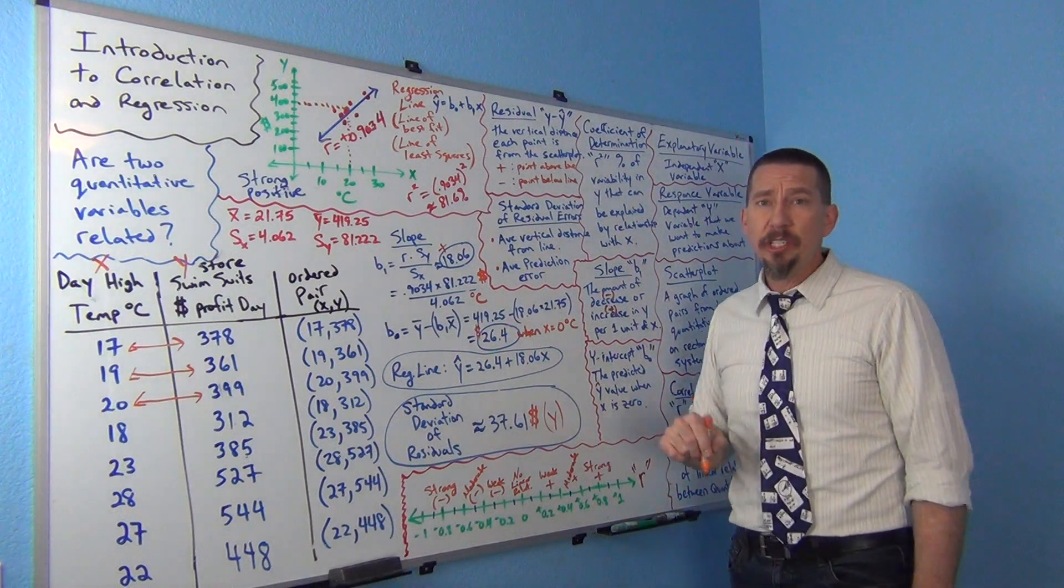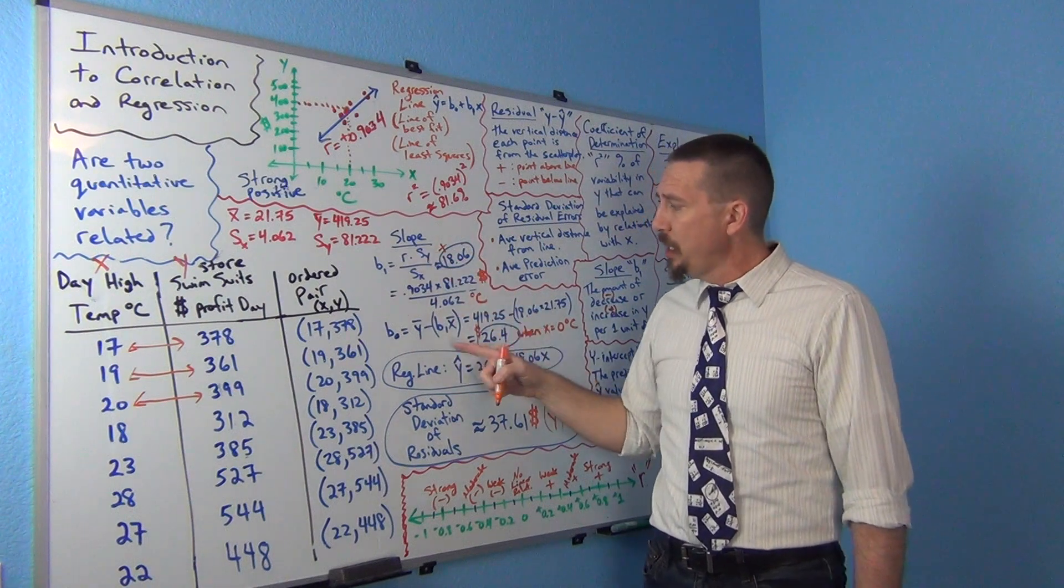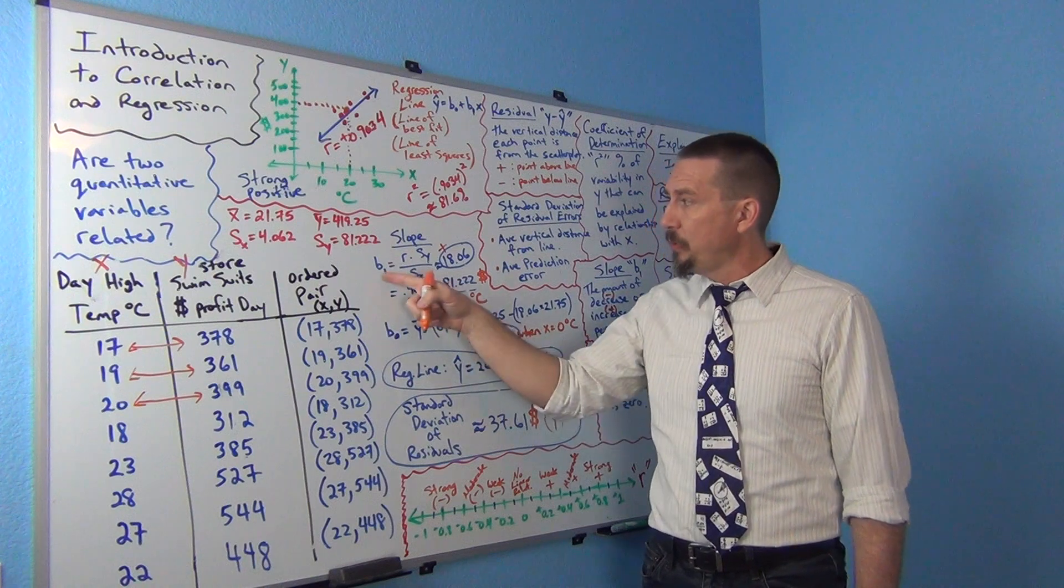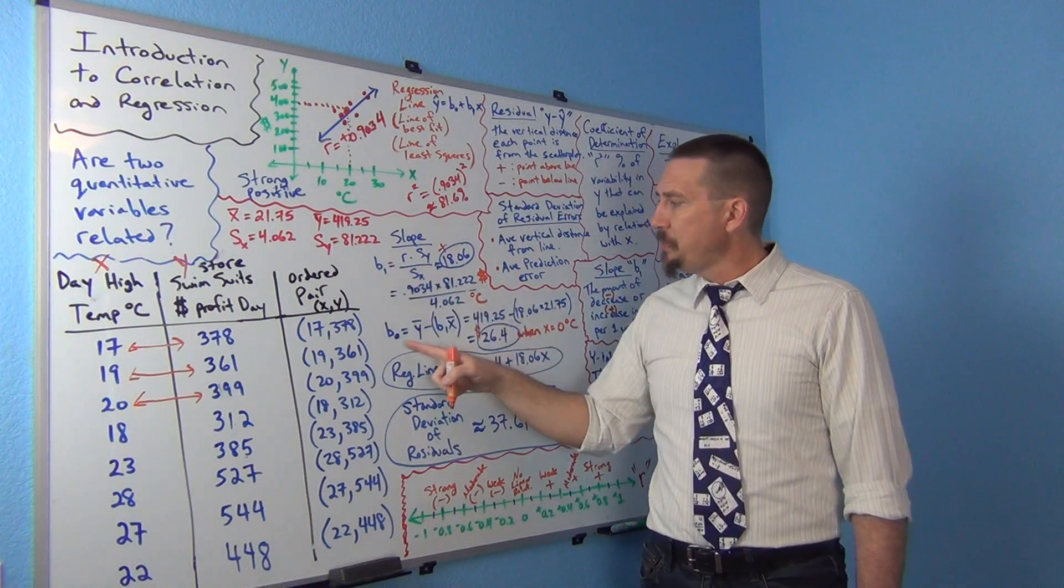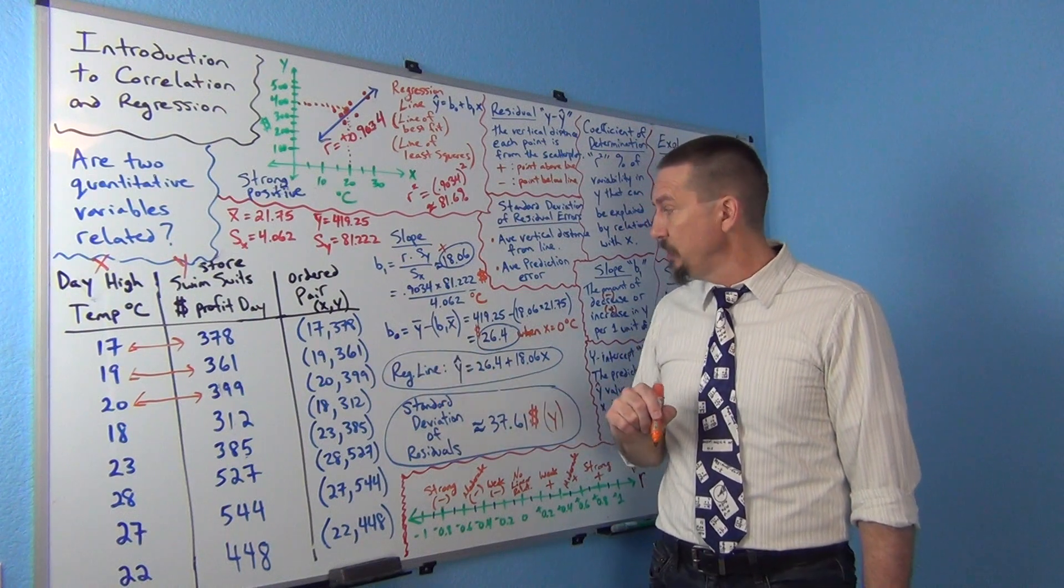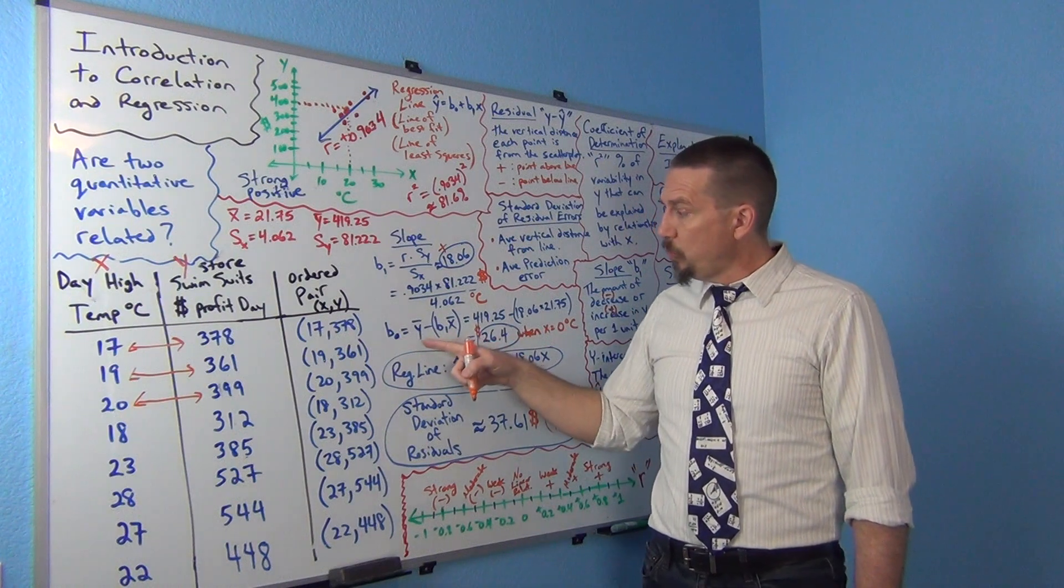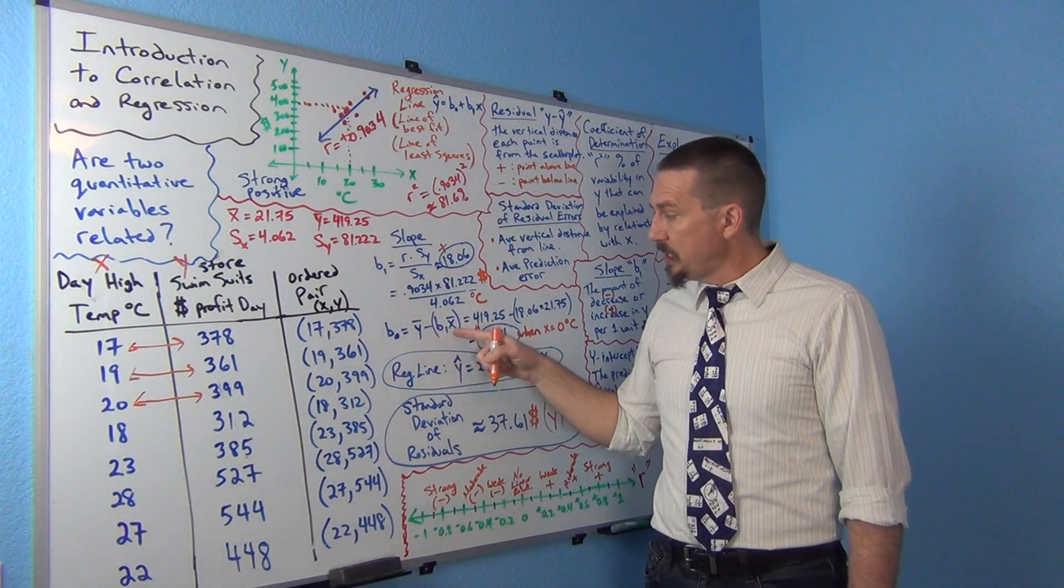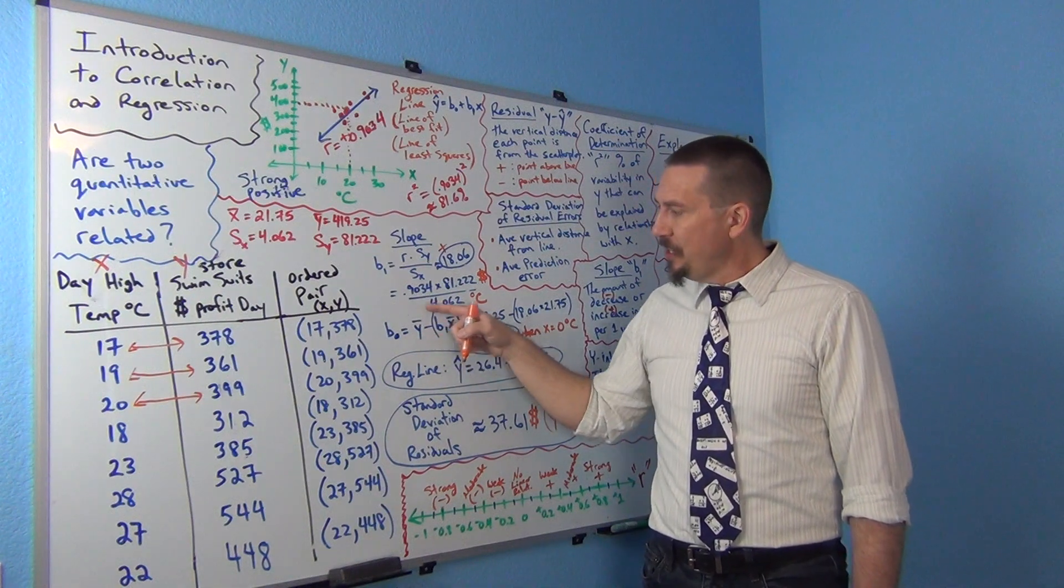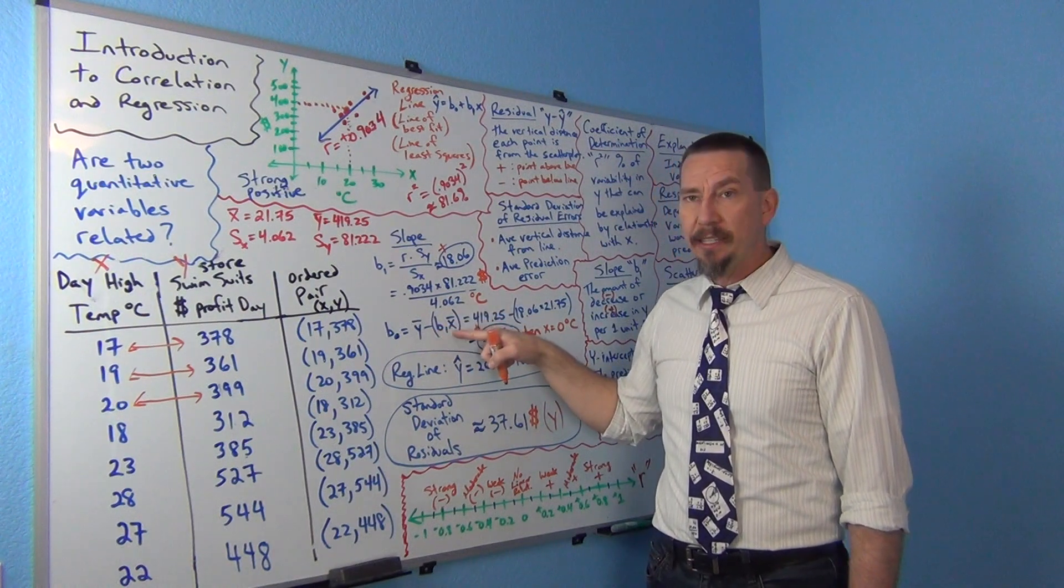Now what about the y-intercept? Just like in algebra, you have to actually calculate the slope first before you figure out the y-intercept. Because if you notice in the formula, it actually has b1 in the formula, which is actually the slope. So the y-intercept is b0. We often call this the y-intercept b0. So the formula for the y-intercept is y-bar minus b1 times x-bar. So this is the mean of the y's minus the slope times the mean of the x's.